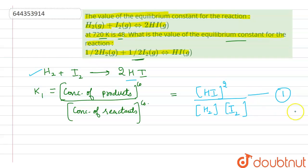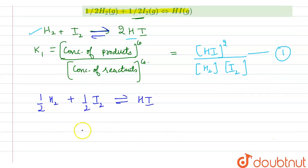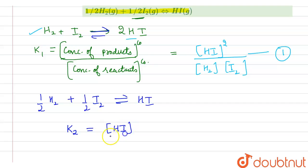Now we write the second reaction: ½H₂ + ½I₂ → HI. For this reaction, the equilibrium constant is K₂. So K₂ = [HI] / ([H₂]^(½) × [I₂]^(½)). Let's call this reaction 2.